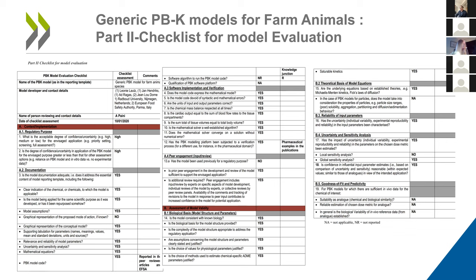Part two of the guidance contains the checklist for model evaluation. The checklist shows how the models have been implemented into the OECD guidance framework, including the name of the model, context and implementation, regulatory purpose, documentation, software implementation and verification, peer engagement, and then Part B — the assessment of model validity, covering biological basis, model structure and development, theoretical basis of model equations, reliability of input parameters, uncertainty and sensitivity analysis, and goodness of fit and predictivity.